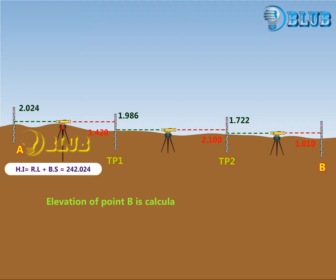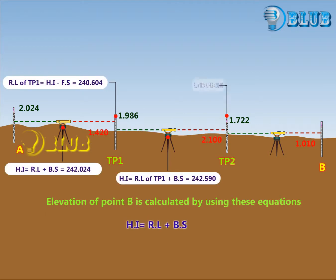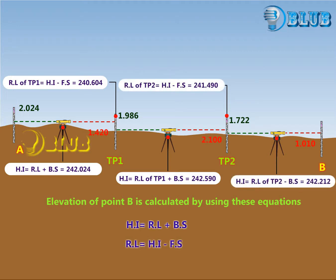The elevation of point B is calculated by using these equations. Height of instrument is equal to reduced level plus backsight. Reduced level is equal to height of instrument minus foresight.